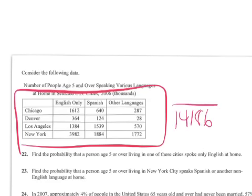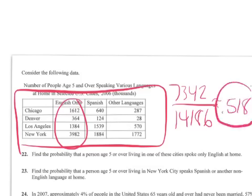So if you add up all the cities there are 14,186. And what are the chances they spoke only English? It's just these right here. So that's going to be our 7342. This is approximately .518. So about 51.8% of the people in these four cities only spoke English.